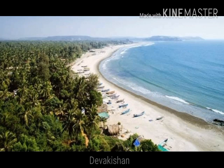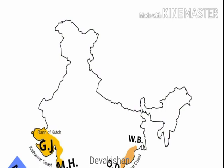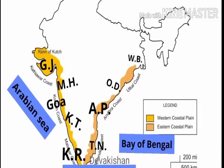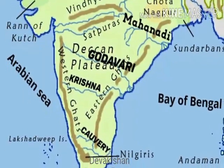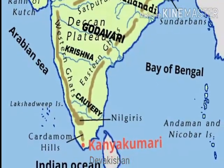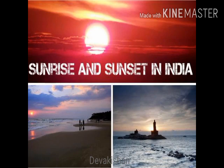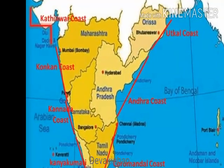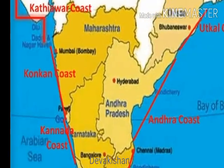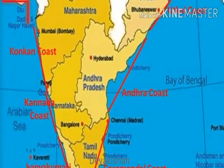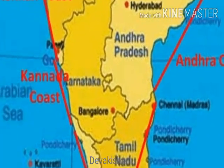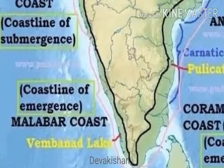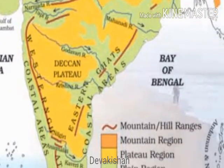The coastal plains of India are bordered by coastal strips along the Arabian Sea on the west and the Bay of Bengal on the east. The western coast starts from the Rann of Kutch and ends at Kanyakumari. It is narrower than the east coast and is uneven and broken by hilly terrain. It can be divided into three parts: 1. Konkan Coast — the northern part, stretching through Maharashtra and Goa; 2. Kinara Coast — the middle part, stretching through coastal Karnataka; 3. Malabar Coast — the southern part, stretching through coastal Kerala.